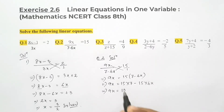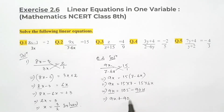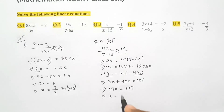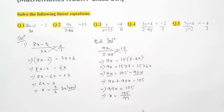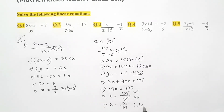So 9x = 105 - 90x. Both 9x and 90x contain the variable x, so we keep both on the left side: 9x + 90x = 105, which gives 99x = 105. So x = 105/99. Both terms can be cancelled by 3, giving x = 35/33. It is solved.